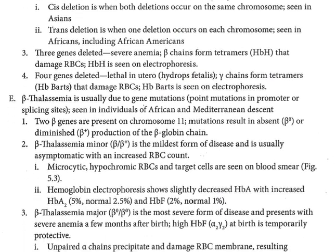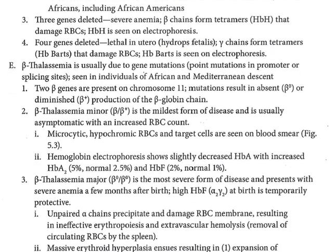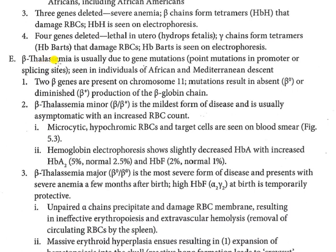Now we are going to beta thalassemia, which is important. Alpha has four genes and beta has only two genes. The mutations in beta thalassemia: if the beta gene is completely absent, it is called beta-zero (B0). If there is some residual beta chain production, it is called beta-plus (B+).